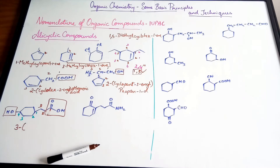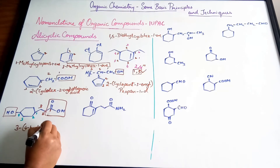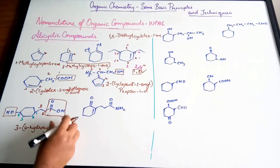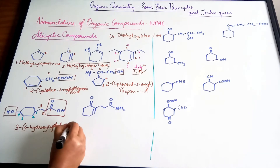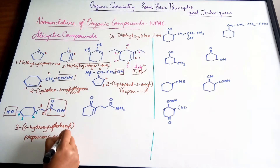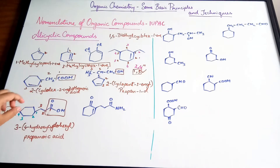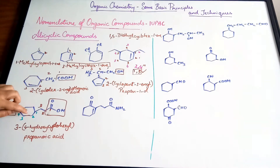We number the cyclohexane ring so the carbon joined to the side chain is position one: one, two, three, four — the hydroxyl group is at the fourth carbon. So the substituent is 4-hydroxycyclohexyl. The name of the compound is 3-(4-hydroxycyclohexyl)propanoic acid.